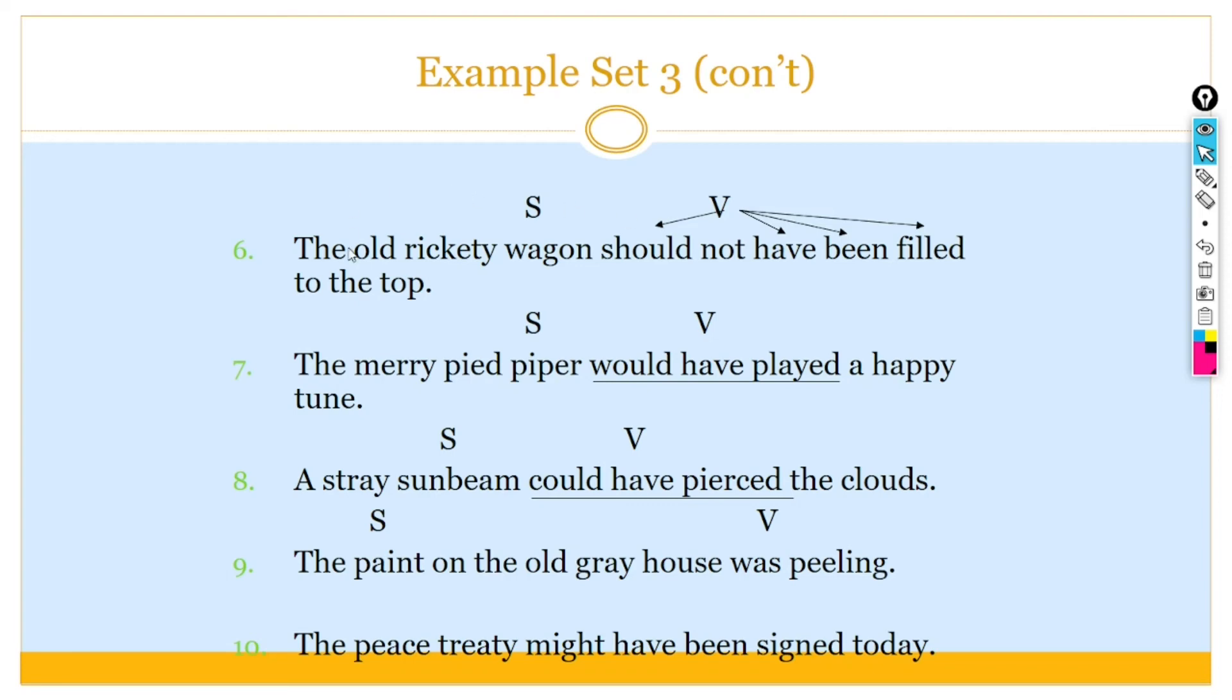Similarly, the old rocky wagon should not have been filled to the top. Married white people would have played a happy tone is the verb. Stray sunman could have passed the cloud. Here, you can see the subject and verb, and you can also see the subject and verb in other sentences.